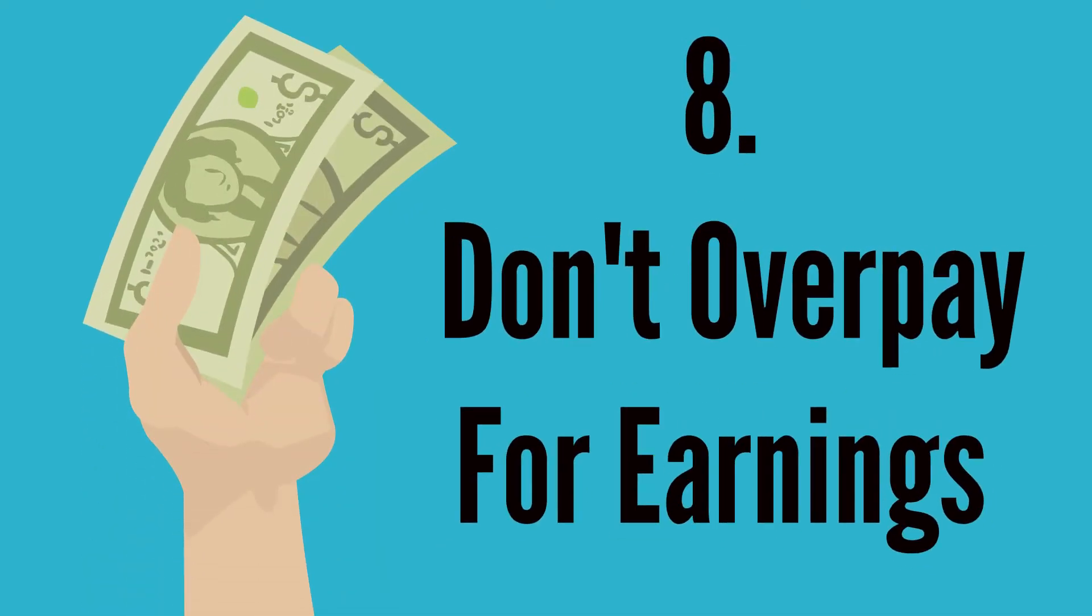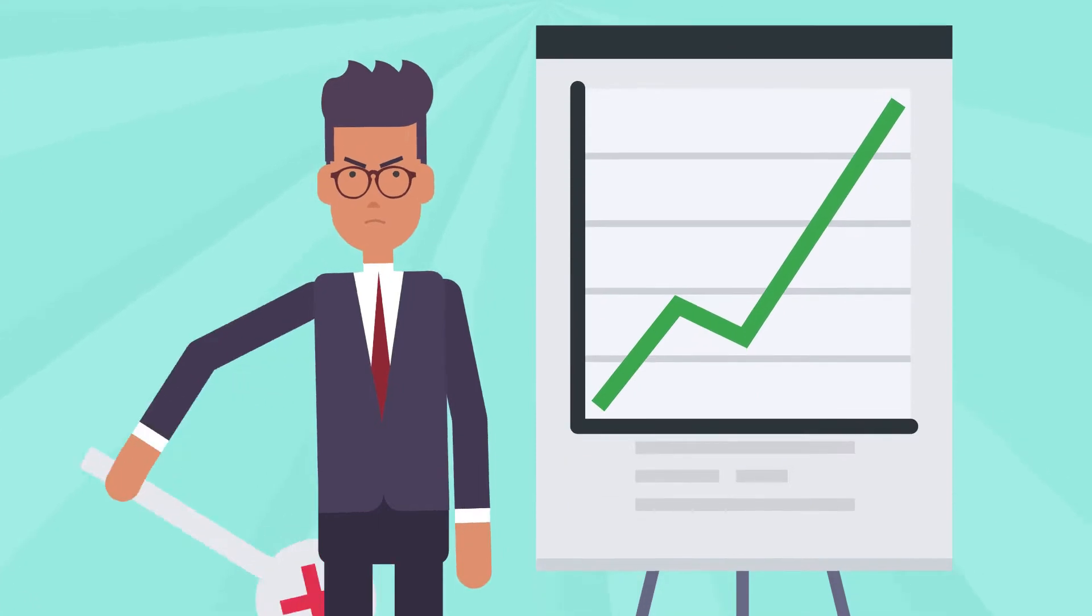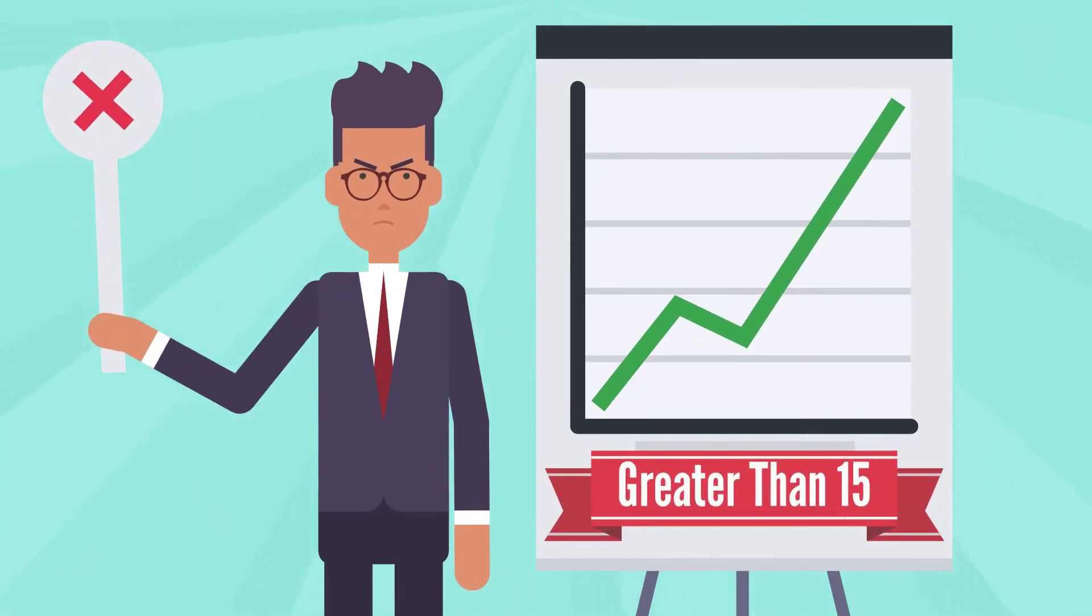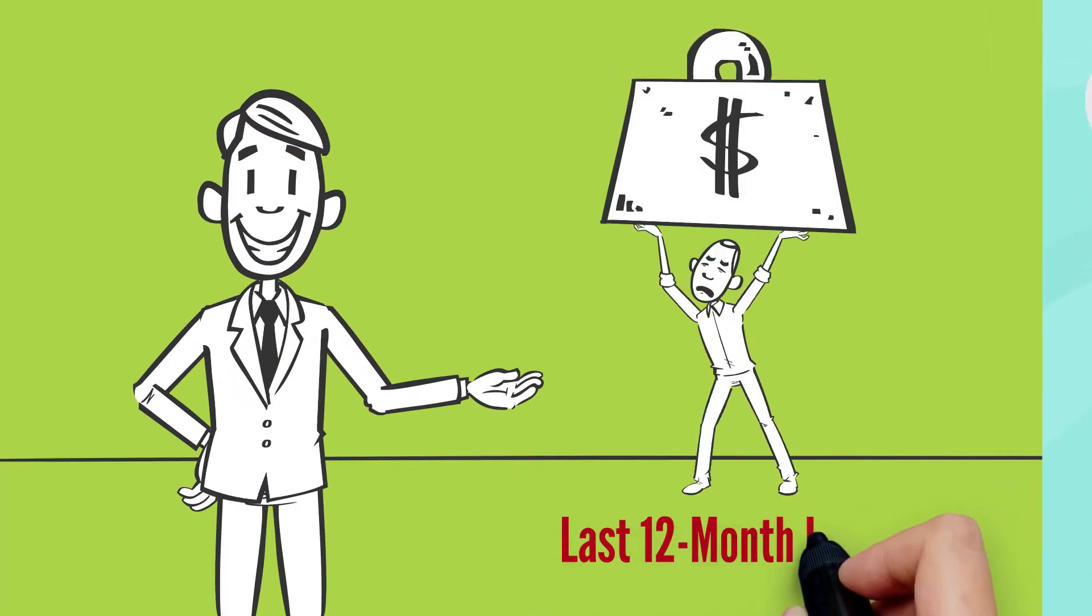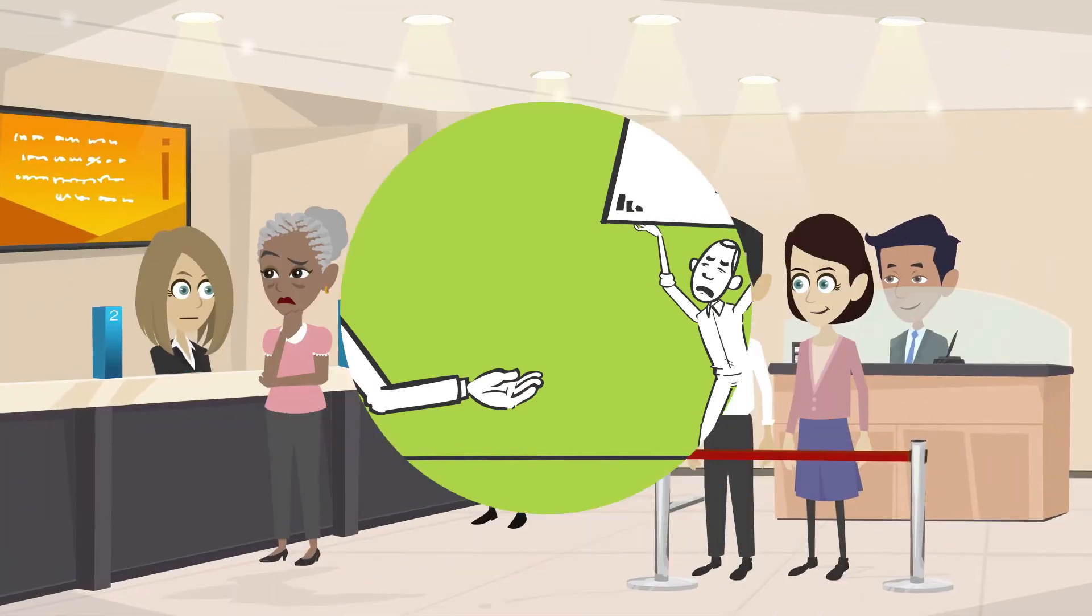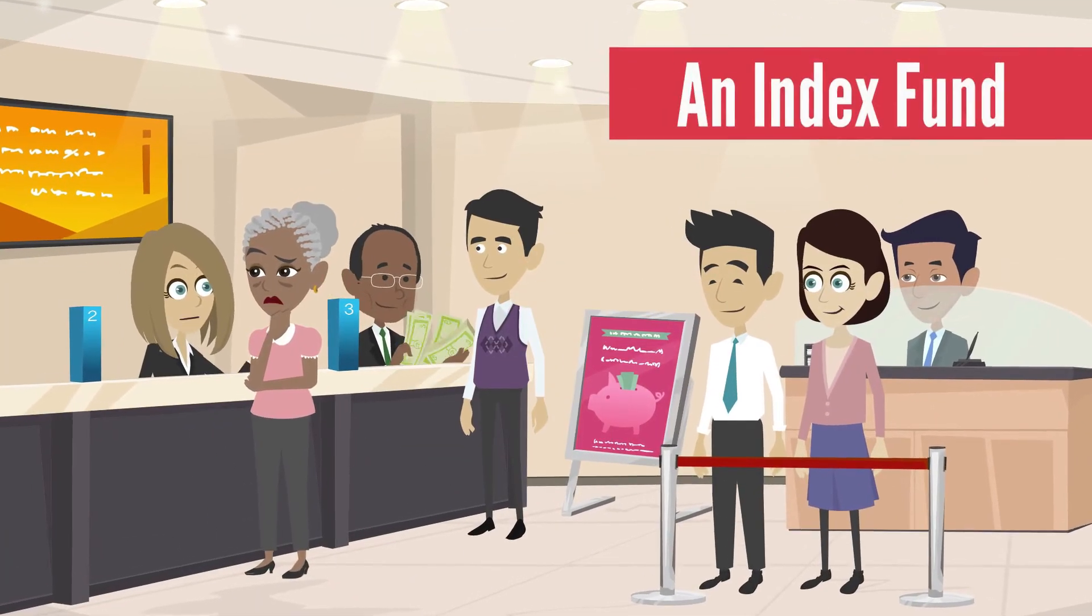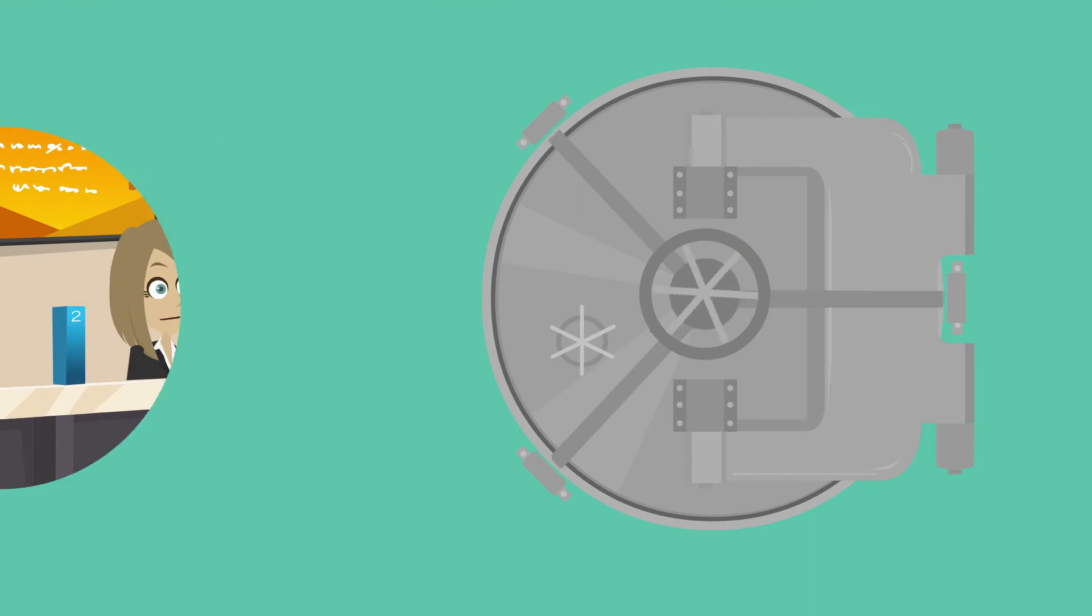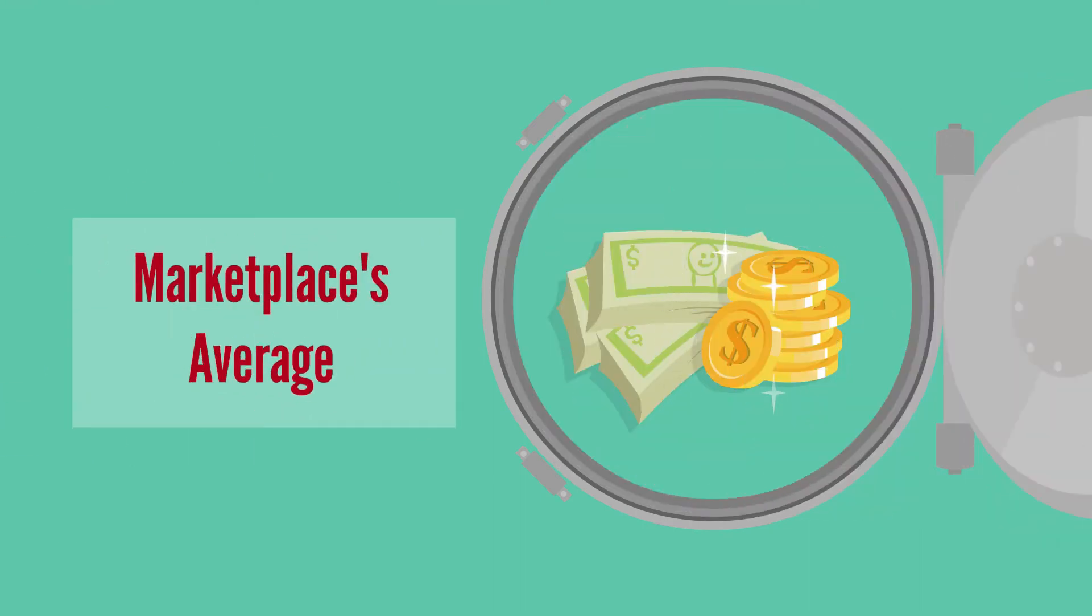8. Don't overpay for earnings. Don't let the P/E ratio be greater than 15 when making use of the last 12-month income. An alternative today is to invest in an index fund, which will suddenly have returns similar to the market average.